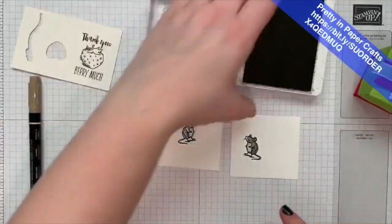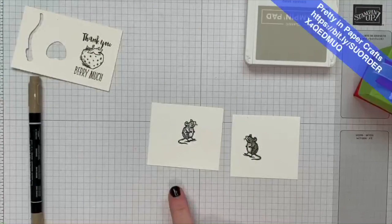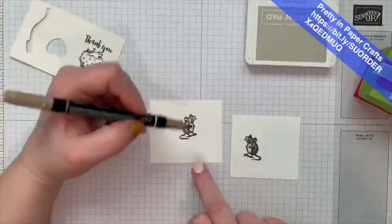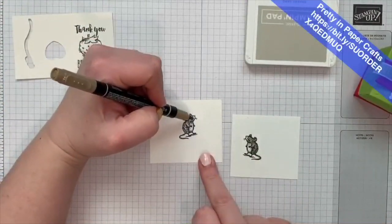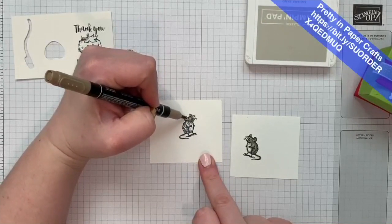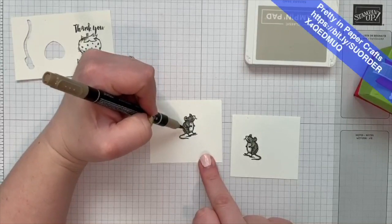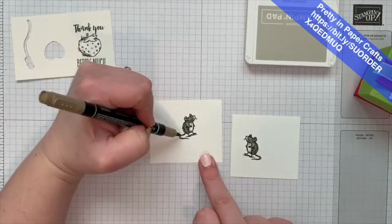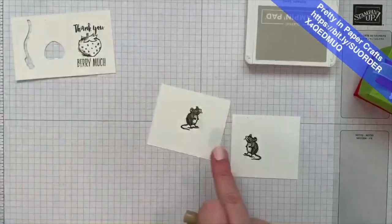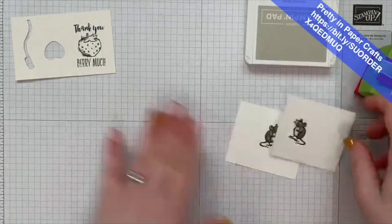Okay. So, there's the stamped mouse. And then I have the Stampin' Write marker to color the other mouse. I don't know why I used the Stampin' Write marker this time, but I did. I'll just color him in. Or her. He or she. Don't forget his little mouse tail. Okay. So, now they're colored. These ones we'll cut out with dies.